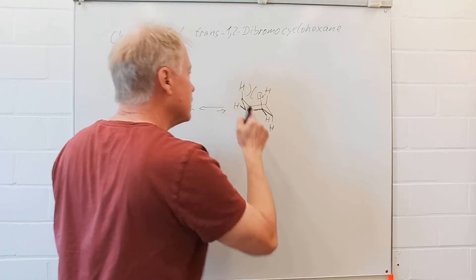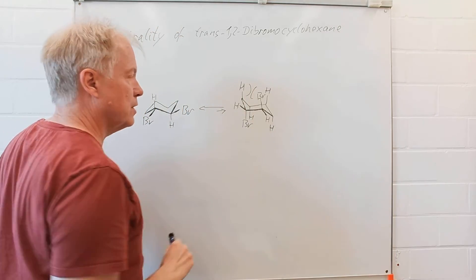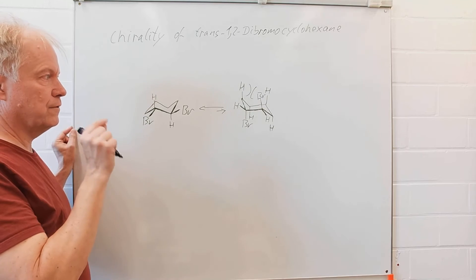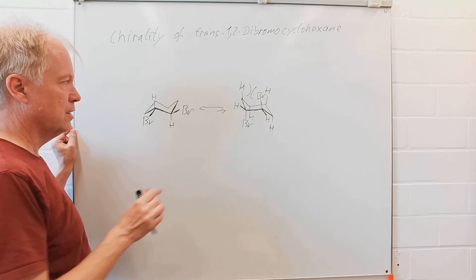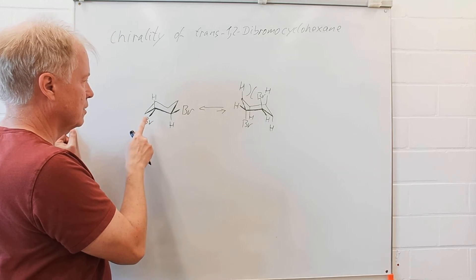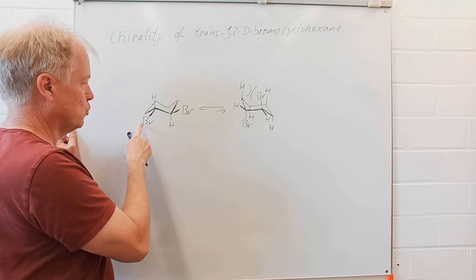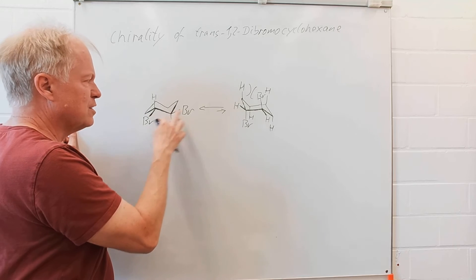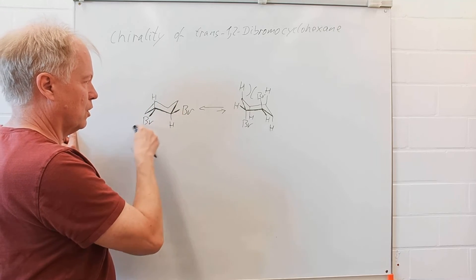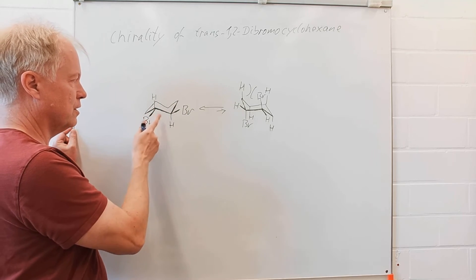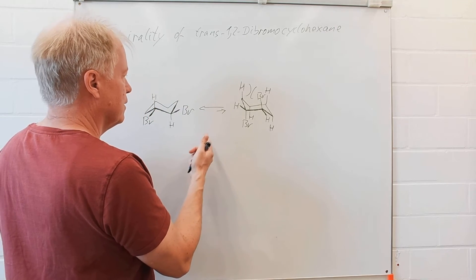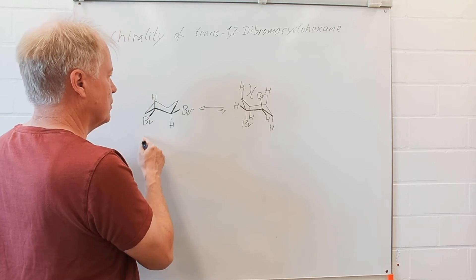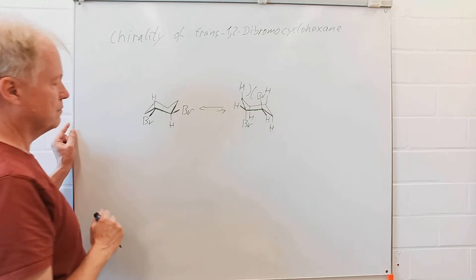This multiple steric interaction, the 1,3-diaxial interaction, is more serious compared to the relatively close proximity of the two bromides in this conformation, and therefore the equilibrium is by far on this side.